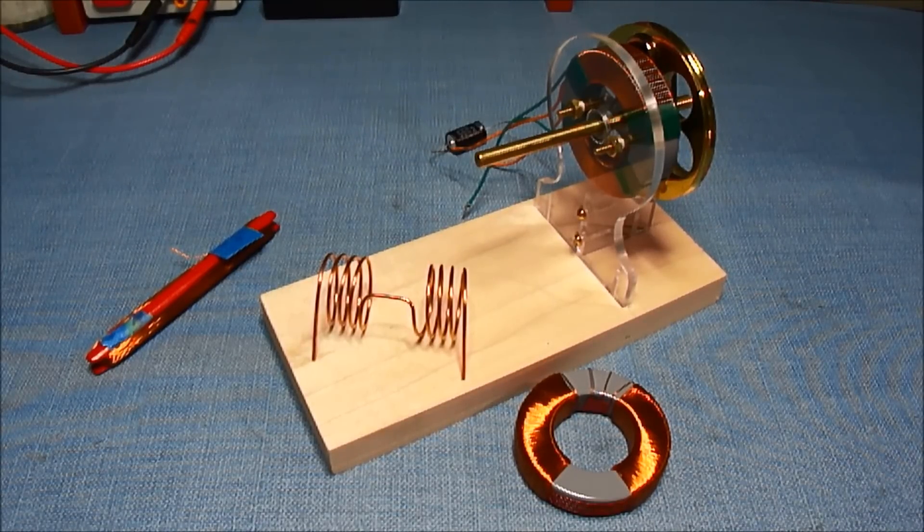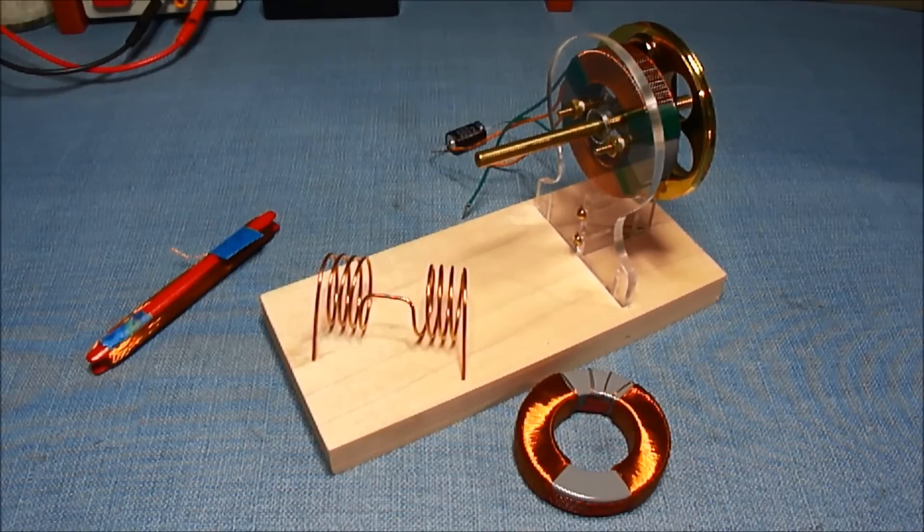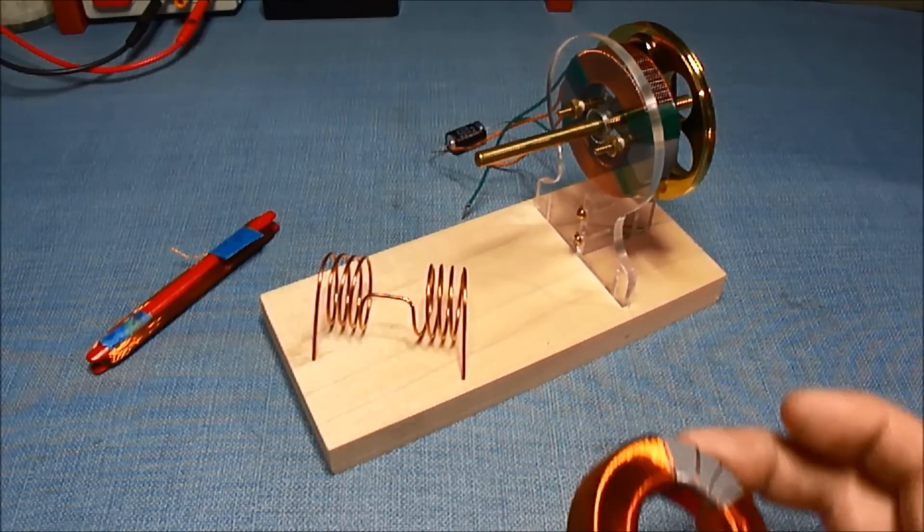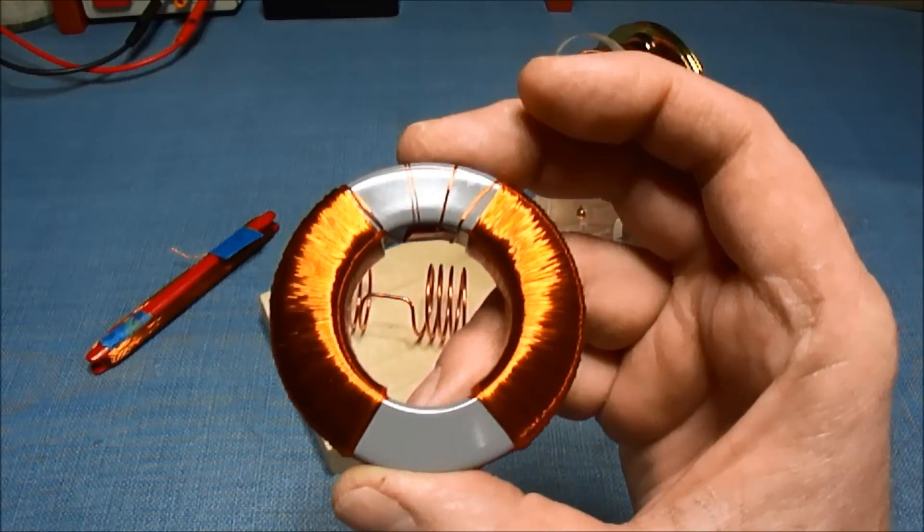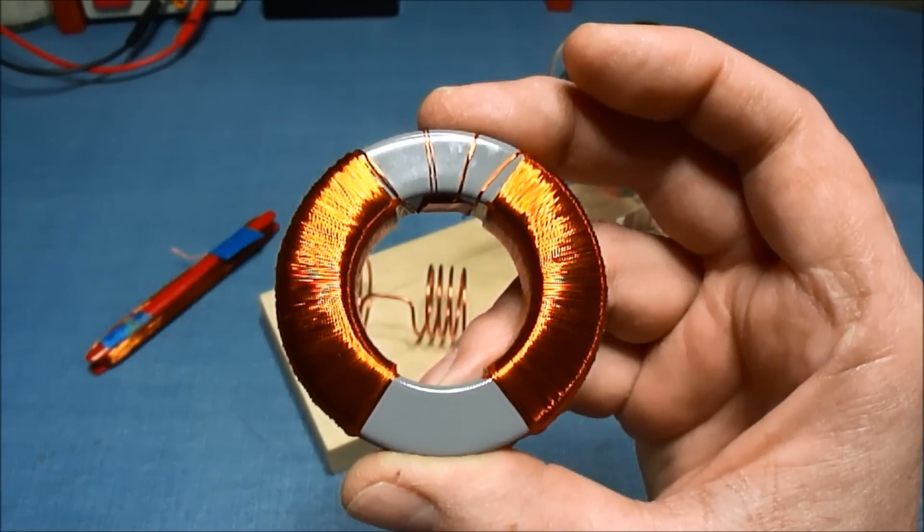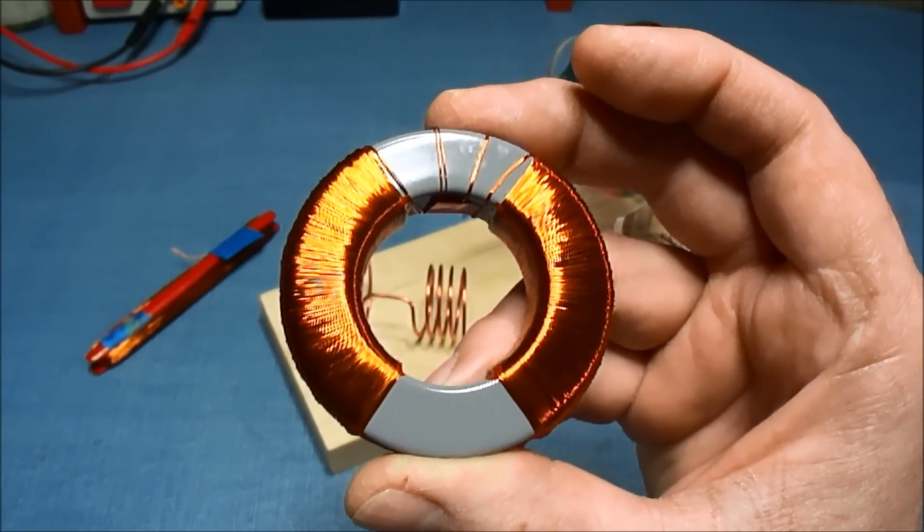But since the voltage was so low there wasn't much I could do with it so I made this other coil. This one has 31 gauge bi-filer and there's a total of 1400 turns.